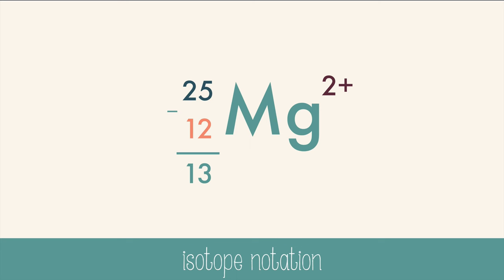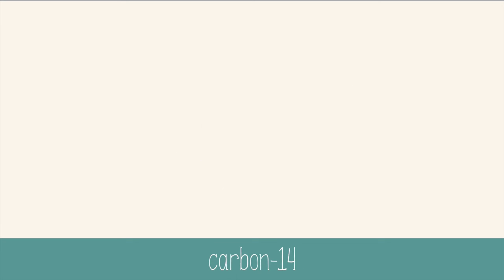Let's practice writing isotope notation. Carbon-14 is a radioactive isotope of carbon. First, we write the symbol. The 14 in the name carbon-14 is the mass number. And lastly, we need to just look up the atomic number of carbon on the periodic table, and we're done. We don't need to write the net charge, because in this case it's neutral.